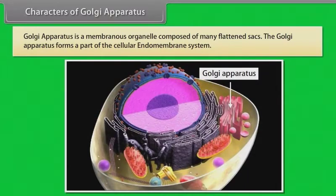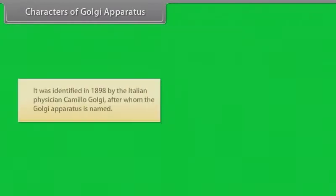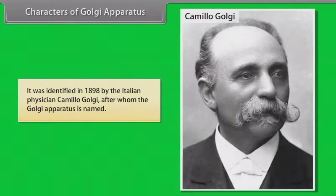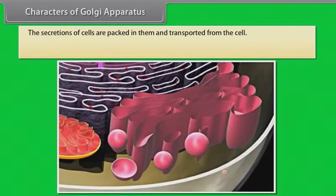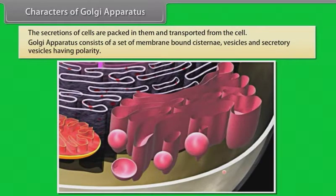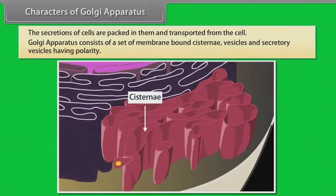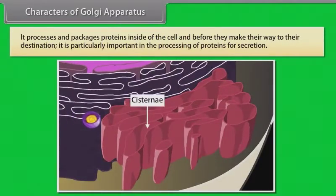Golgi apparatus is a membranous organelle composed of many flattened sacs. It forms a part of the cellular endomembrane system. It was identified in 1898 by the Italian physician Camillo Golgi, after whom it is named. The secretions of cells are packed in it and transported from the cell. Golgi apparatus consists of a set of membrane-bound cisternae, vesicles, and secretory vesicles having polarity. It processes and packages proteins inside the cell before they reach their destination, and is particularly important in the processing of proteins for secretion.